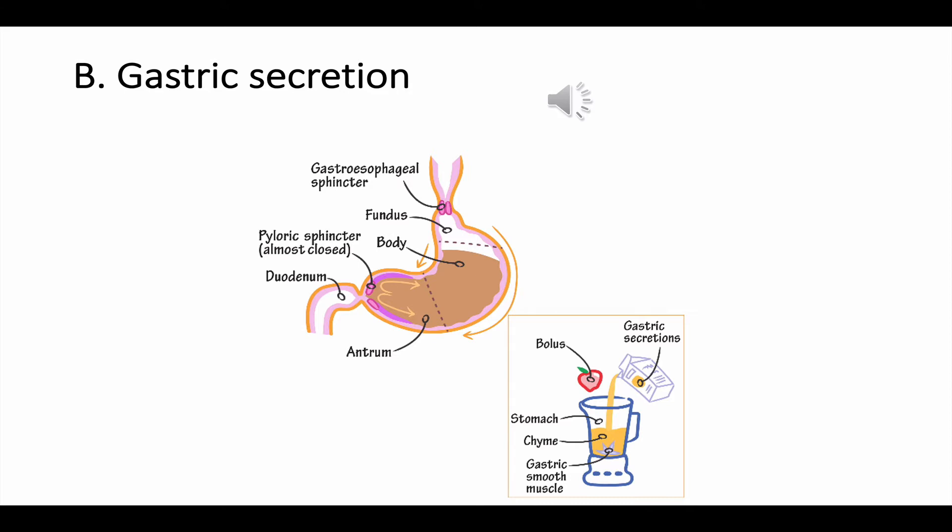The cells responsible for gastric secretion are: first, parietal cells, located in the body and fundus, responsible for secretion of HCl and intrinsic factor. Intrinsic factor is controlled via vagal stimulation by acetylcholine, and also by other hormones like gastrin and histamine.